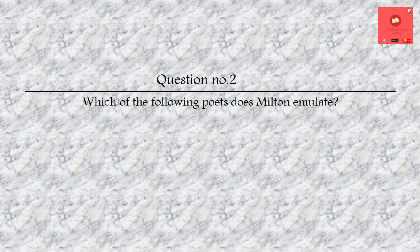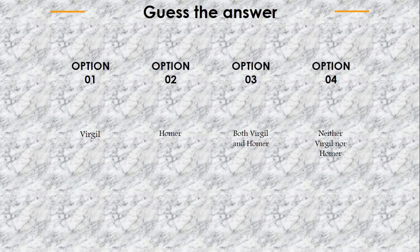Question number 2: Which of the four big poets does Milton emulate? Options are: Virgil, Homer, both Virgil and Homer, or neither Virgil nor Homer. The answer is both Virgil and Homer.